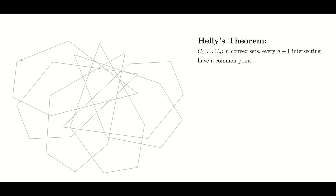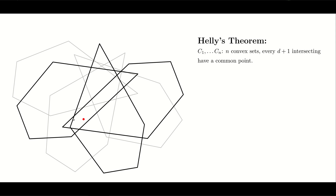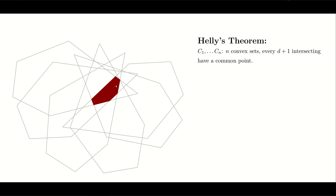Finally, we get to Helly's theorem. Imagine you have a set of n convex sets in d-dimensional space, and furthermore, they have the property that every d plus one convex shapes have a common point — in other words, they intersect. For example, you have these convex shapes in the plane, and if you pick any three of them, then there is a point that is inside all three chosen convex shapes. If this is true, then all of the shapes have a common intersection. In particular, this red area is the area that is inside all of them.